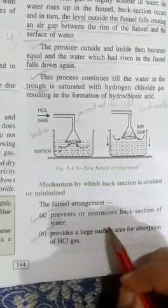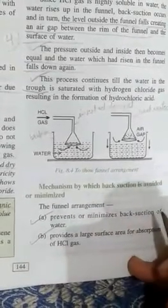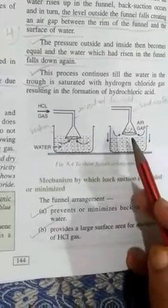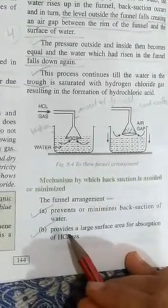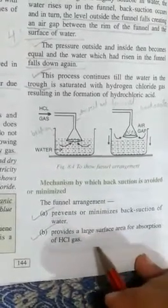We can remove back suction by taking a few measures such as: the funnel arrangement should be proper to give maximum space so that more gas can dissolve in water. Provide large surface area for absorption of the gas, then use an anti-suction device which prevents the accident.